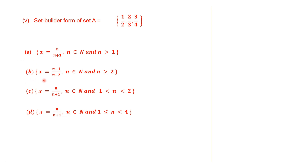Looking at option B, it says n is greater than 2, meaning it should start from 3 onwards. But the fractions shown include 2 and 1, so that option is also wrong. Option C says n is greater than 1 but less than 2 — but there's a 1 present, so that option is also wrong.